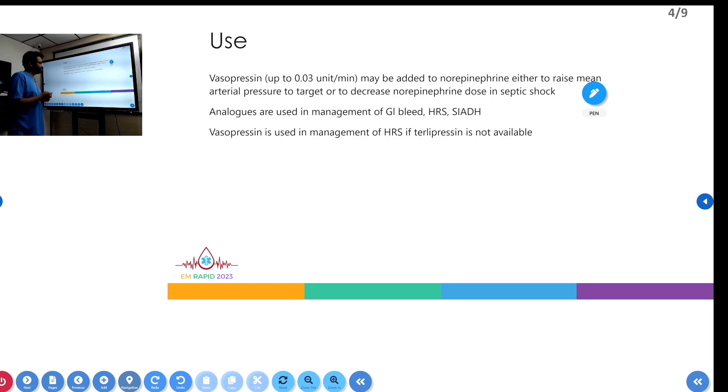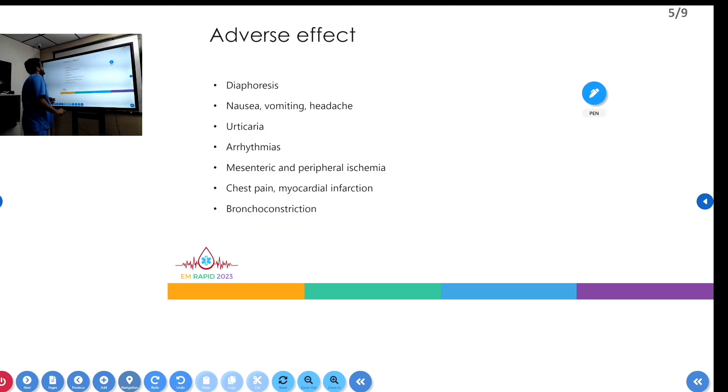Its analogues are also used in management of GI bleeds, HRS, and SAAD. In the management of HRS, if terlipressin is not available, vasopressin is used.